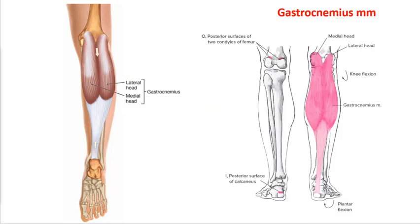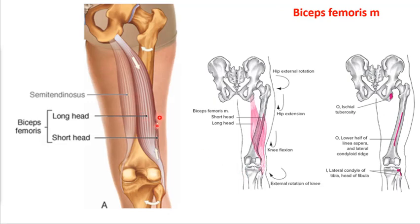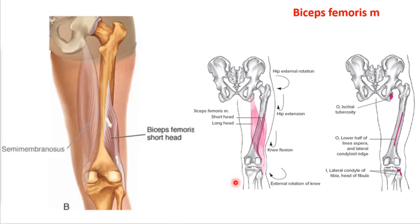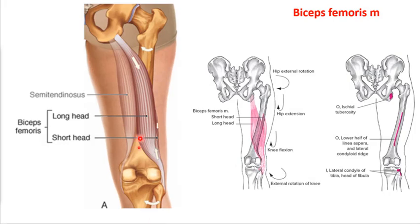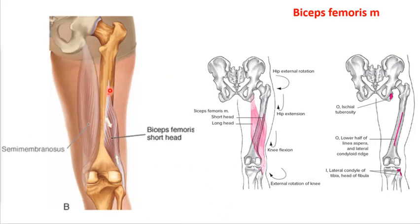The biceps femoris — long head and short head — is a powerful knee flexor and also performs external tibial rotation. The long head crosses the hip while the short head does not, so the short head has no influence over hip movements. However, both heads converge into the same tendon and have the same effect at the knee: knee flexion and external rotation.